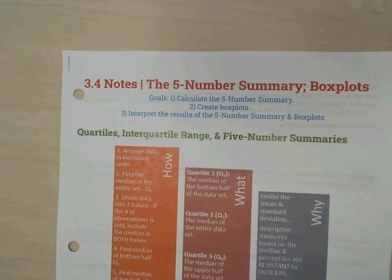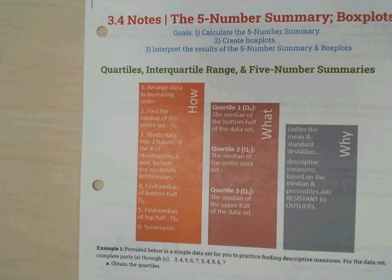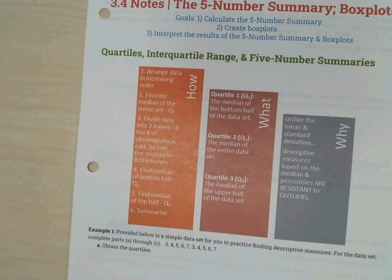We're going to talk about quartiles, interquartile range, and five-number summaries. The how, what, and why of the five-number summary. First, can you read for me the how? Number one, arrange data in increasing order. Two, find the median of the entire set, Q2. Three, divide data into two halves. If the number of observations is odd, include the median in both halves. Four, find median of bottom half, Q1. Five, find median of top half, Q3. And number six, summarize. Excellent, thank you.